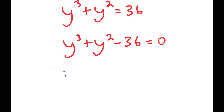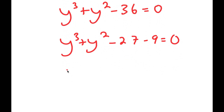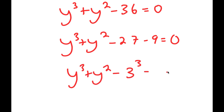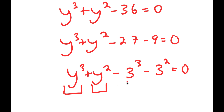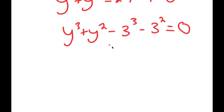From here, I'm going to rewrite the 36 as negative 27 minus 9. The reason I did this is because 27 I can rewrite as 3 to the power of 3, and 9 I can rewrite as 3 squared. Notice how I have a number to the power of 3 and that same number squared — 3 to the power of 3 and 3 squared. So now I'm going to switch the order and group the powers of 3's together and the powers of 2's together.